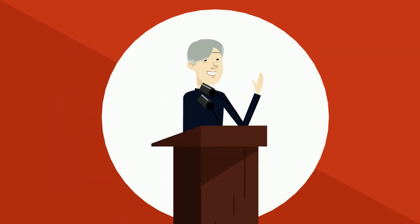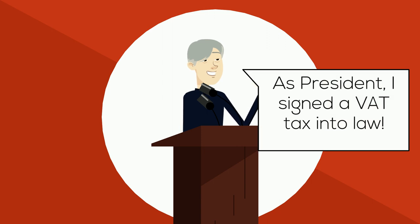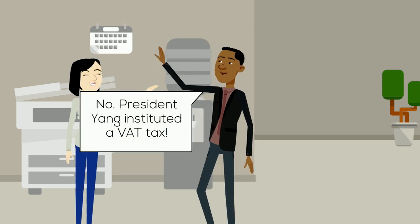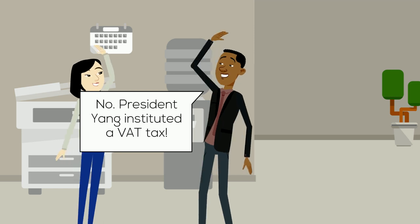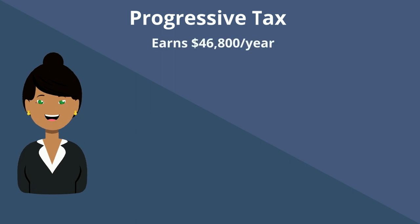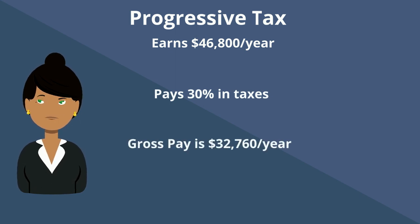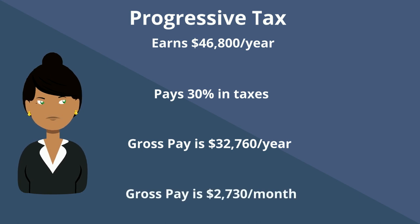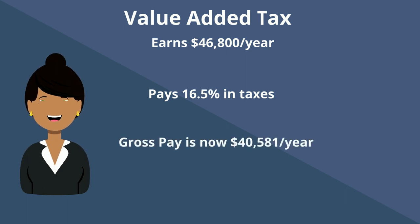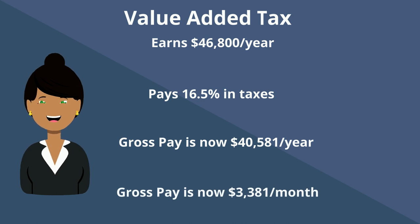Let's conduct a thought experiment. We'll say that the United States implements a VAT tax of 5%, the same that Canada currently does. The first difference is that you take home more of your paycheck — a VAT will replace income tax, returning an average of 13.5% of your gross pay to you. If the average American makes $46,800 per year and currently pays about 30% in taxes, they take home $32,760 per year, or $2,730 per month. Under a VAT tax, the average American would still make $46,800 per year but only pay around 16.5% in taxes, taking home $40,581 per year, or $3,381 per month.